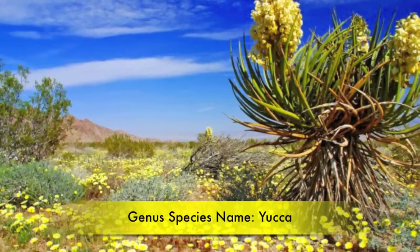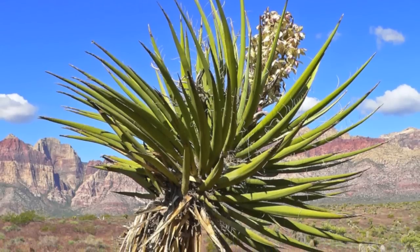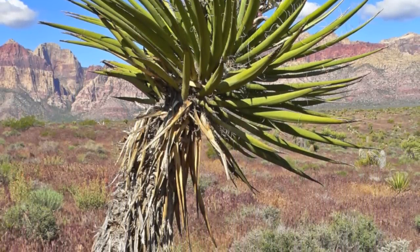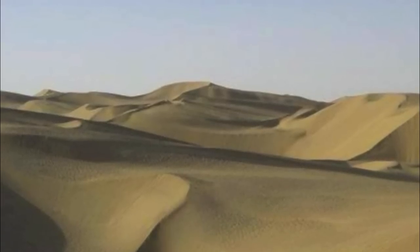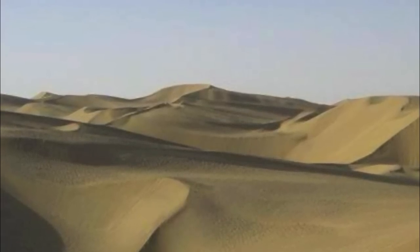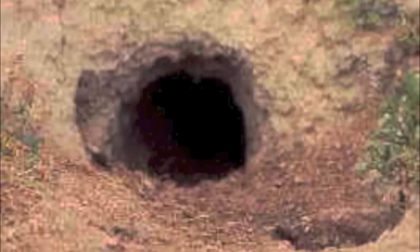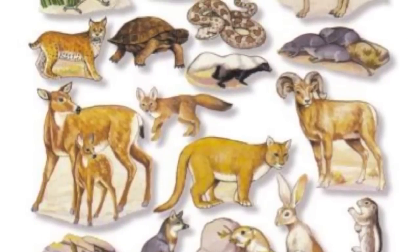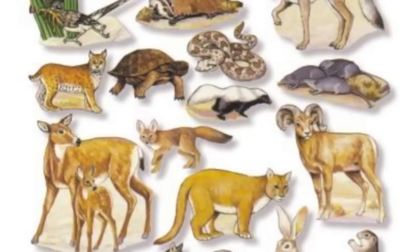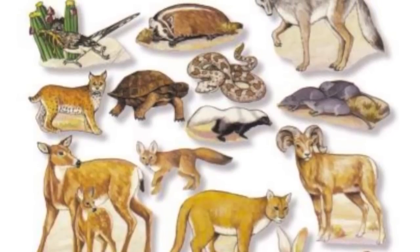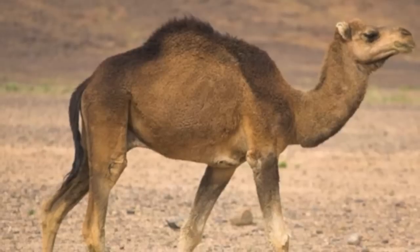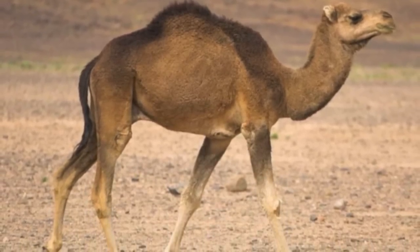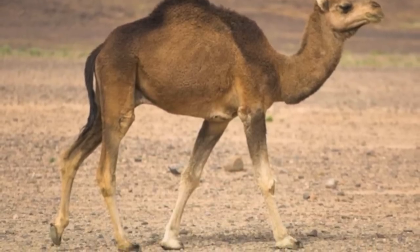Another plant in the desert is the yucca. Its genus and species name is Yucca. It covers a vast area of North and Central America. Animals that live in the desert are rarely active during the day because of the heat. They hide out under rocks or in burrows, and usually move around at night or around dusk or dawn. Often they are light-colored so they will blend in with their surroundings.